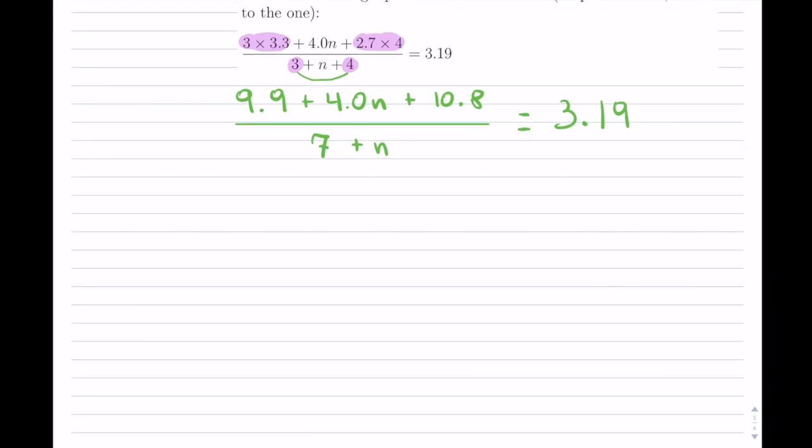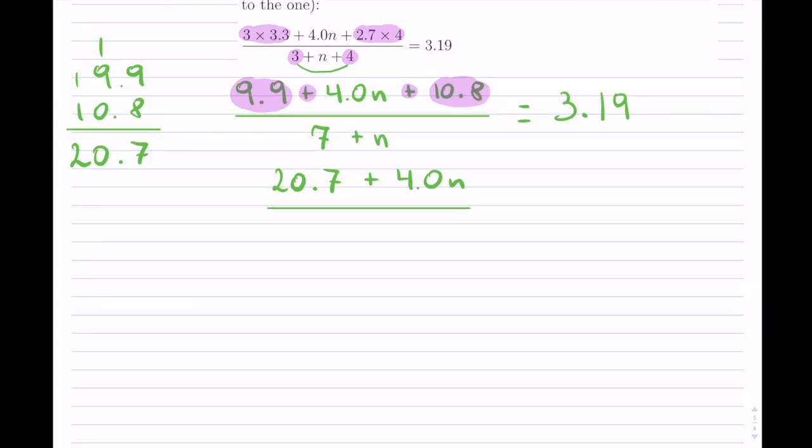So now, what's next? Well, I can still actually simplify this a little bit. I have 9.9 here on top, and then I have this 10.8. Notice that again, I have all additions. So I can actually add those, even though they're not side by side. So here, that 9.9 and then the 10.8, I can go ahead and add them up. Now of course, you can just use your calculator if you like on this one. So it's going to give us 20.7. So we have 20.7 plus 4n divided by 7 plus n equals to 3.19. So this is what we have.